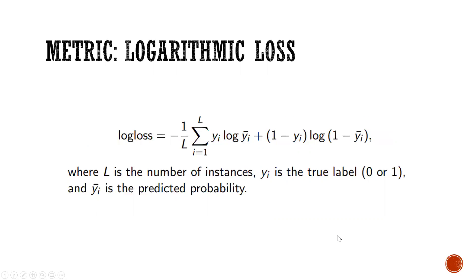The metric for this competition is log loss, a very popular metric for binary prediction. The true label Yi is zero or one, and Yi-hat is the estimated probability. If the label is one and you also predict probability one, the loss will be zero. The goal is to predict high probability for label one and low probability for label zero.